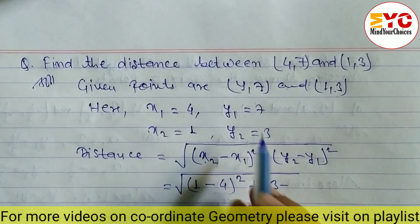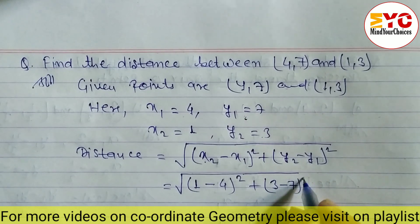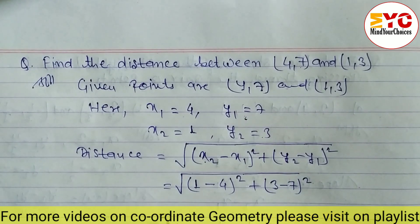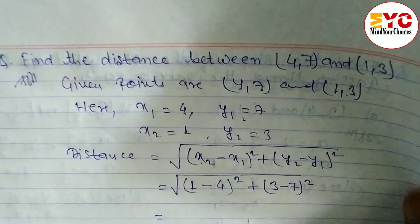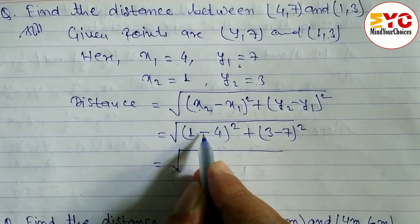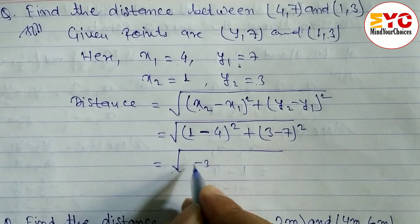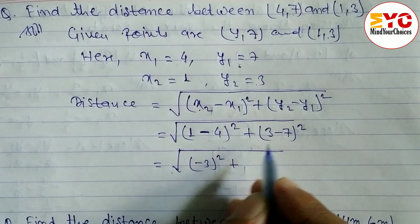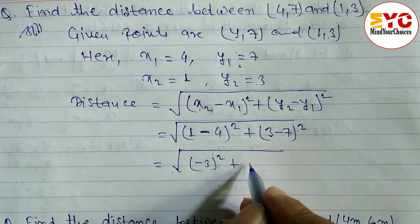After this, we calculate: 1 - 4 equals -3, so we have (-3)². And 3 - 7 equals -4, so we have (-4)². This gives us: square root of [(-3)² + (-4)²].